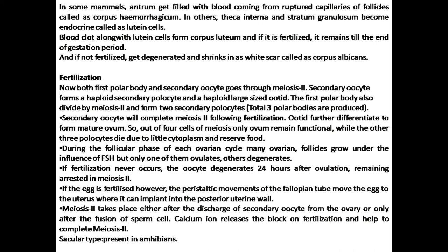Fertilization is divided into three steps. The first is capacitation, in which the maturation of sperm takes place by the removal of the glycoprotein layer of the sperm, and the sperm becomes mature. The second step is the fusion of sperm and egg, after which the secondary oocyte is converted into an ovum and meiosis 2 is completed, forming the ovum and second polar bodies. The third step is the cortical reaction, in which fusion of the male pronucleus and female pronucleus takes place, completing fertilization.